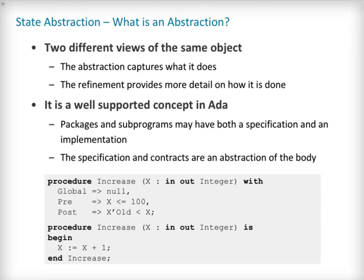Contract-based programming, supported in ADA 2012, allows contracts to be added to a subprogram specification. Contracts can be used to describe the subprogram's behaviour in a more fine-grained manner. All the details of how the subprogram actually works are left to the refined view — in this case, its implementation.